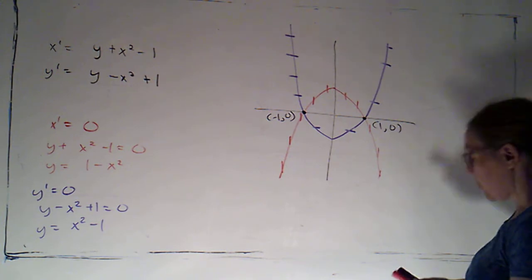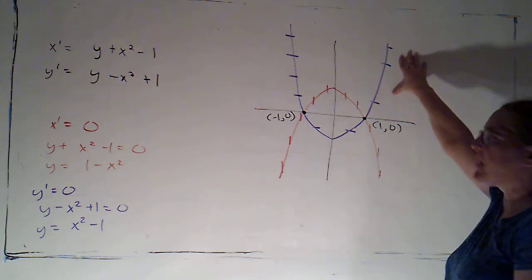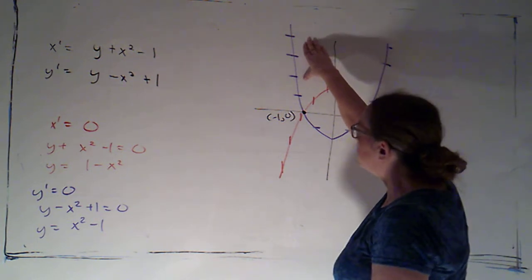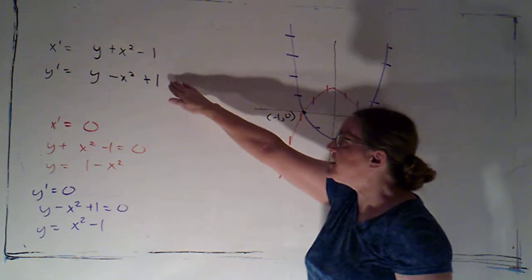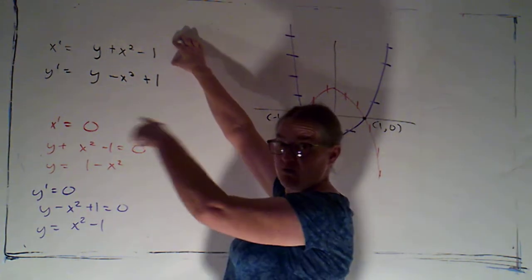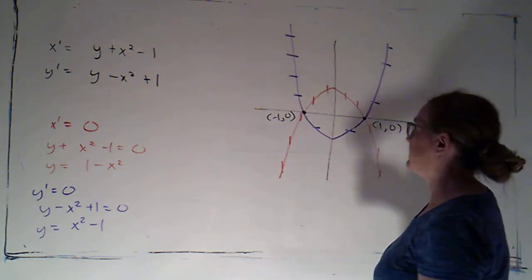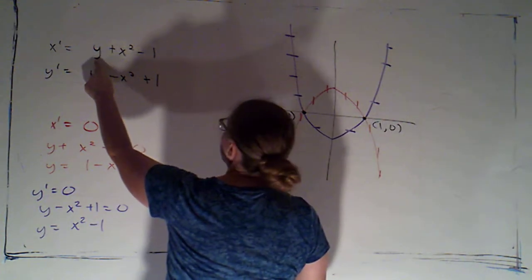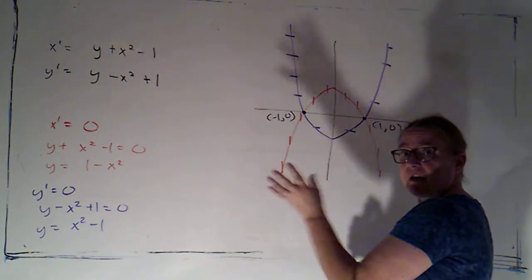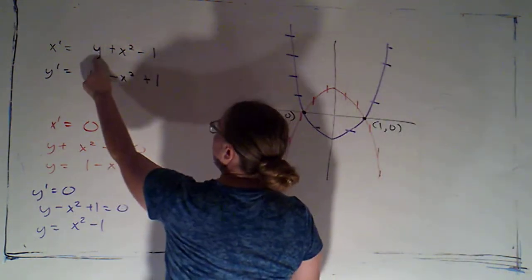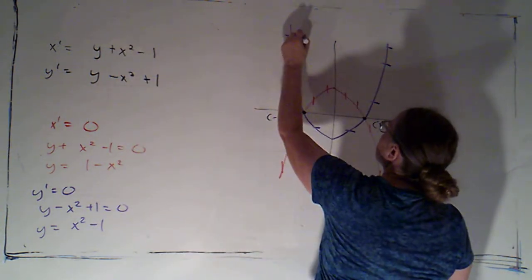Now we can determine the direction of arrows along the nullclines. Looking at the y-nullcline first: since y' = 0 there, we plug into x' to determine left or right. On the upper-left portion, x is negative (to the left of -1) and y is positive, so x' = y + x² - 1 is a positive number plus something bigger than 1, minus 1 — that's positive — so we're moving to the right.